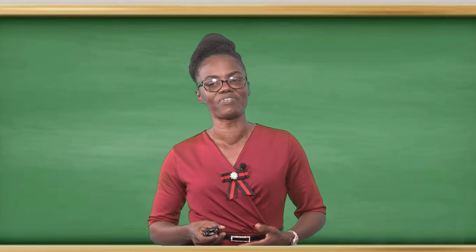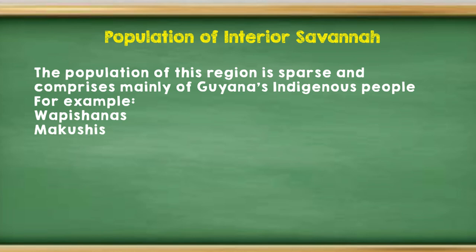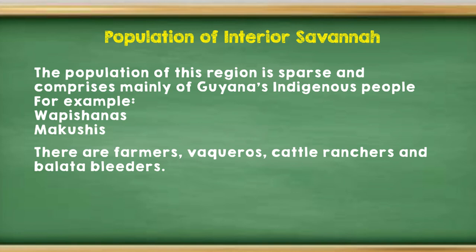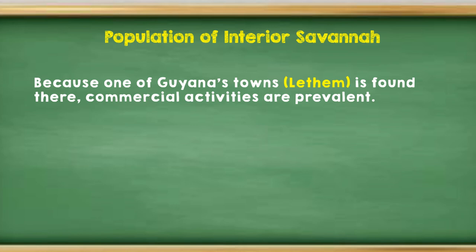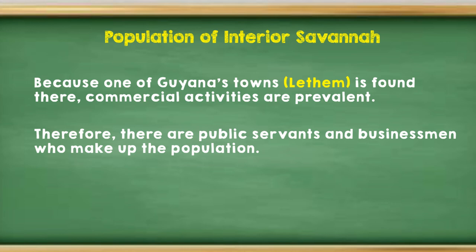Our final natural region is the interior savannas. The population of the interior savannas is sparse and comprises mainly of Guyana's indigenous people. For example, we have the Wapishanas and Makushis who dwell in the interior savannah. They are farmers, vaqueros, cattle ranchers, and belata bleeders — those are the persons who make up the population mainly in the interior savannas. Because one of Guyana's towns, Lethem, is found in the interior savannah, commercial activities are prevalent. Therefore, there are public servants and businessmen who make up the population as well.